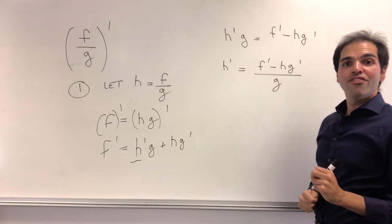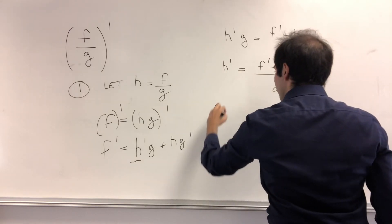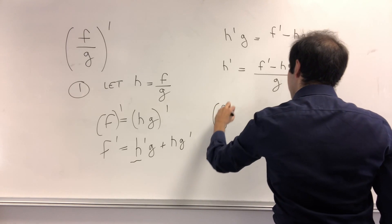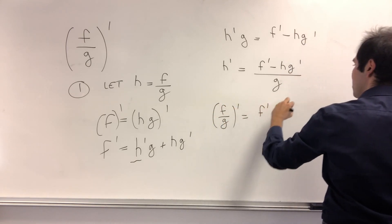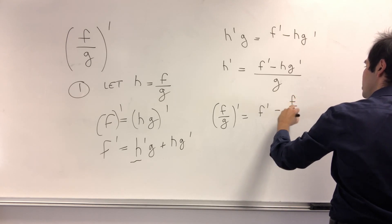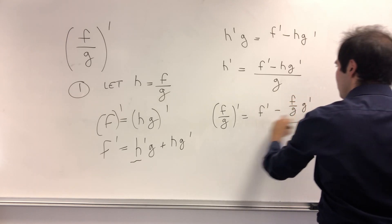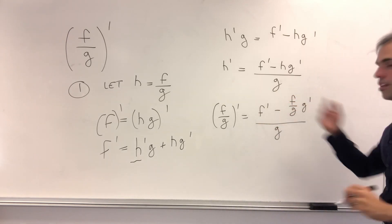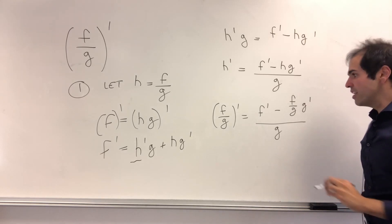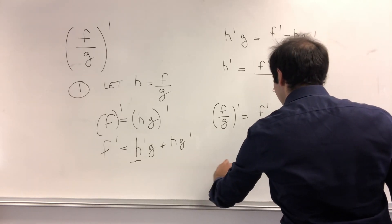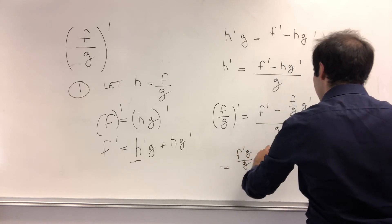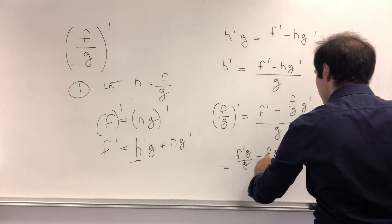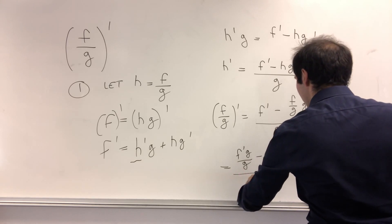All right, and now let's just use the definition of h. So h is f over g. So h prime is f over g prime, and that's f prime minus f over g times g prime over g. And now just put it on a common denominator.